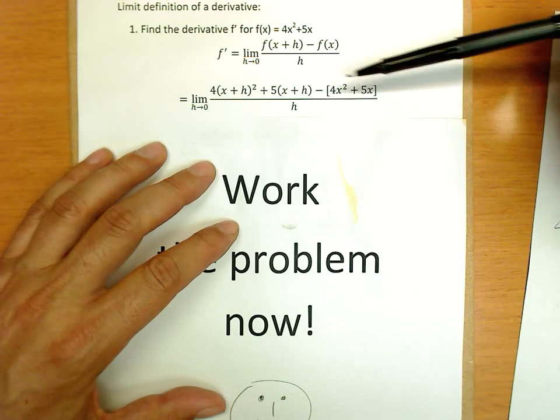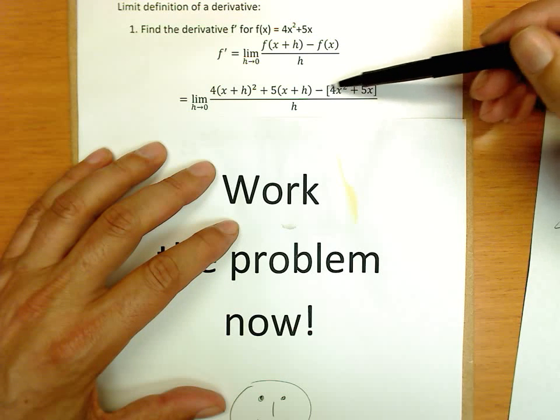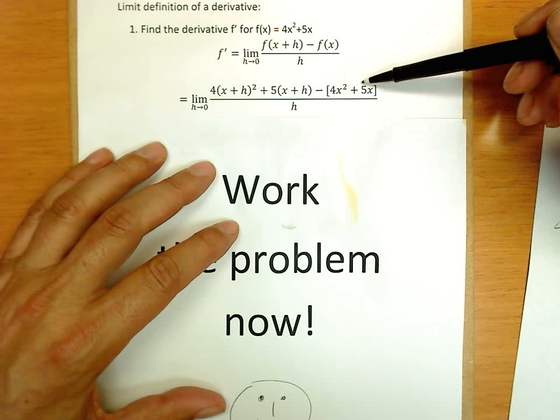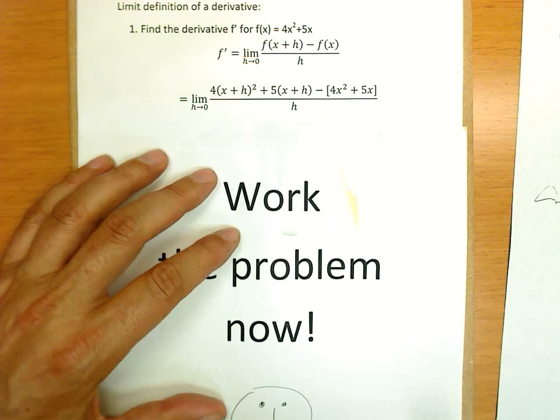And we want to include brackets or parentheses because a very common mistake is to write minus and write both of these and not get the negative distributed to the 5x.